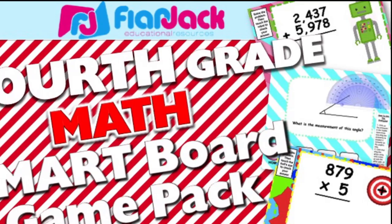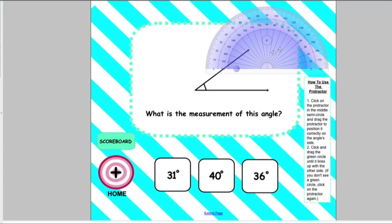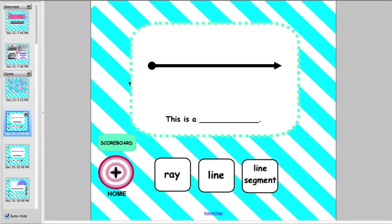In this angle smart board game, students will answer questions about rays, lines, line segments, and such. They will also measure angles and estimate the size of angles. If they answer correctly, a correct page will appear. If they answer incorrectly, an oops page will appear.